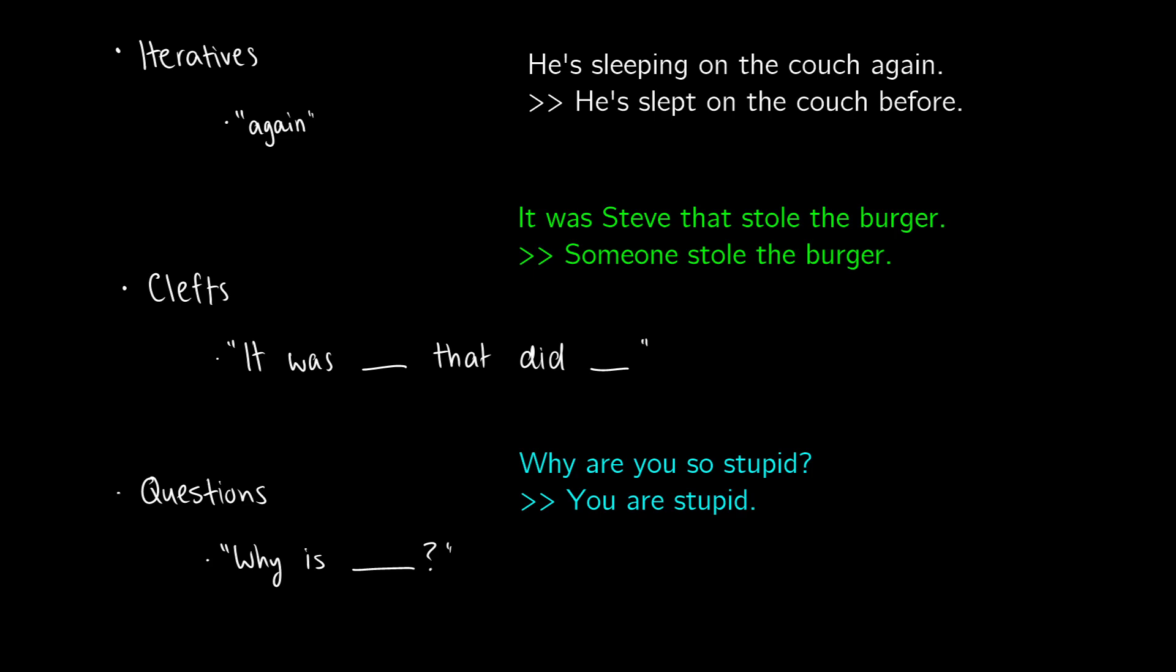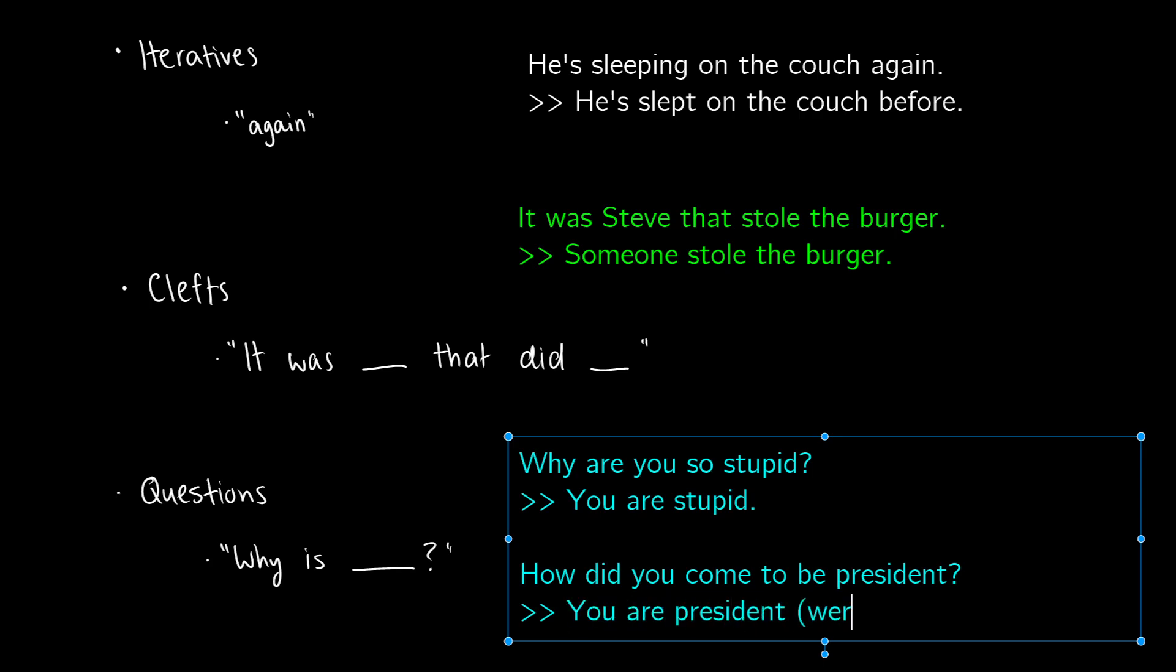This can be 'why' questions or 'how' questions like 'How did you come to be president?' The presupposition there is that you are or were president, and you're asking a question about the past. These wh-questions are also presupposition triggers, and they assume that the fact you're asking about is true.